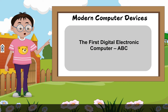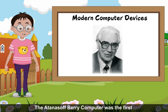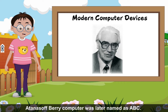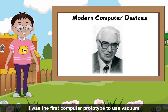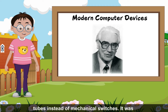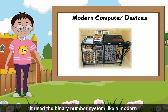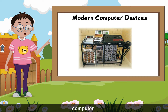Modern Computer Devices. The first digital electronic computer — ABC: The Atanasoff-Berry Computer was the first automatic electronic digital computer, later named ABC. It was the first computer prototype to use vacuum tubes instead of mechanical switches. It was designed by John V. Atanasoff and Clifford E. Berry. It used the binary number system like a modern computer.